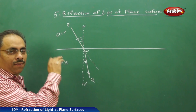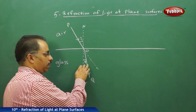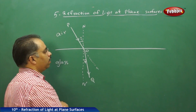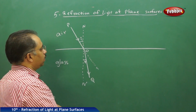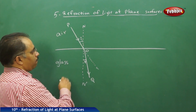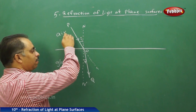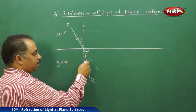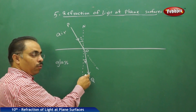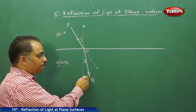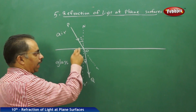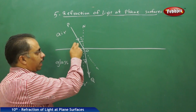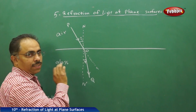Unlike in reflection, we have here an angle of refraction. When the light ray is going from a rarer medium to a denser medium, it is bending towards the normal. This implies that the angle of refraction is less than the angle of incidence.